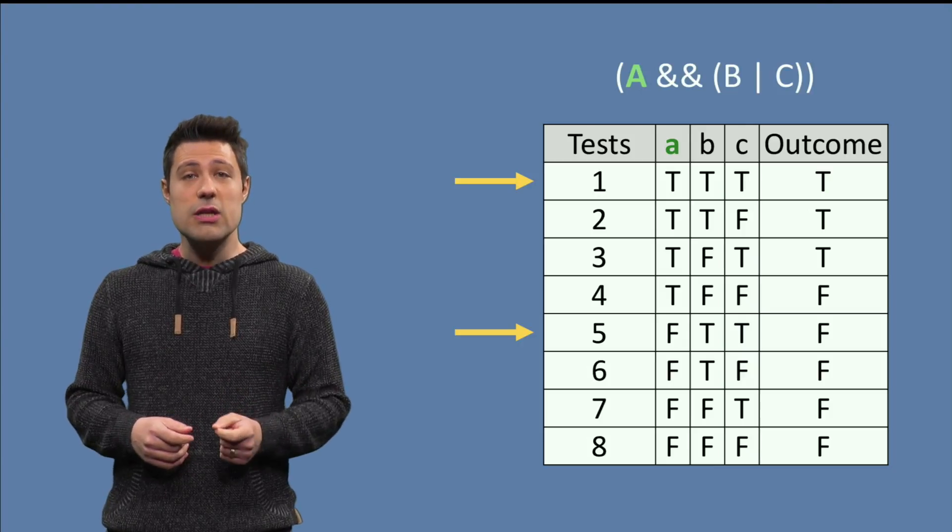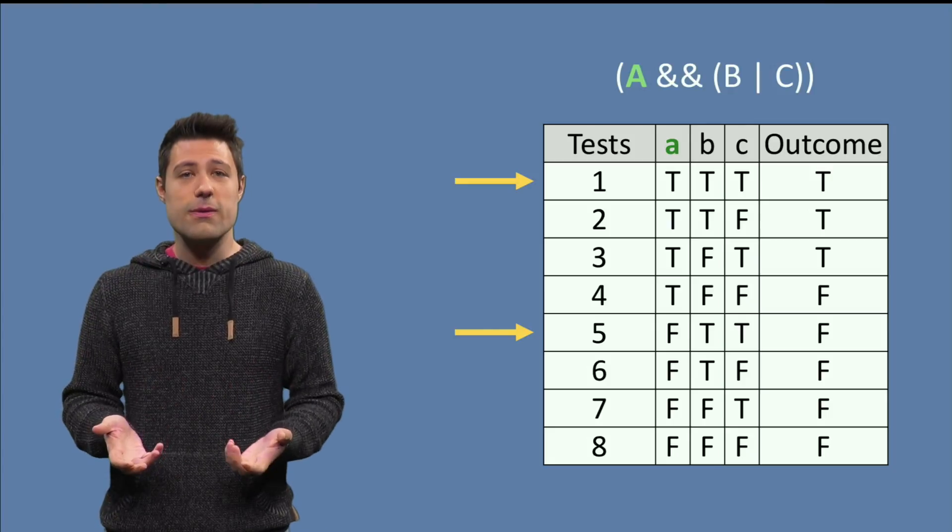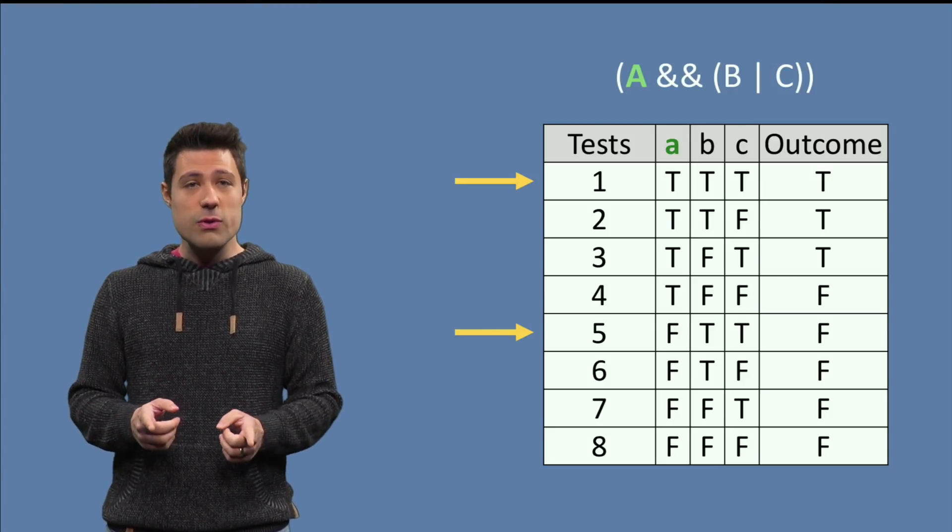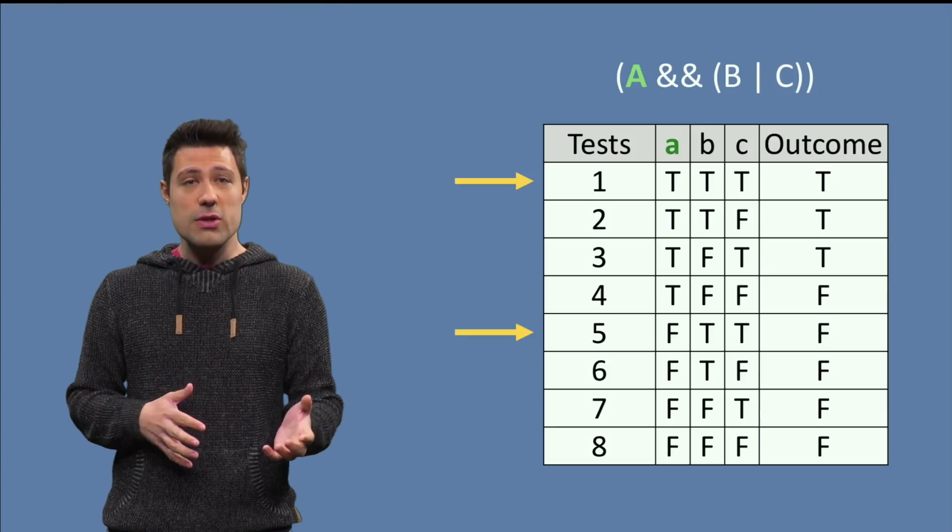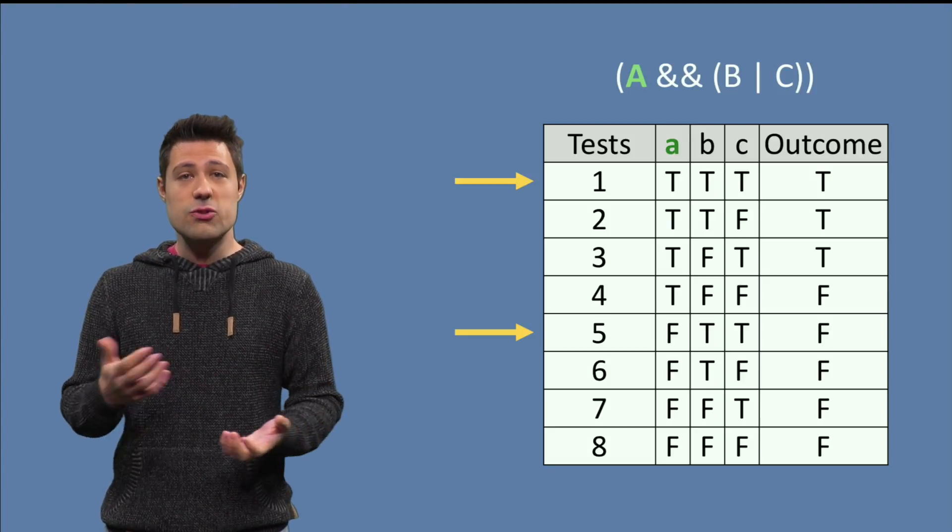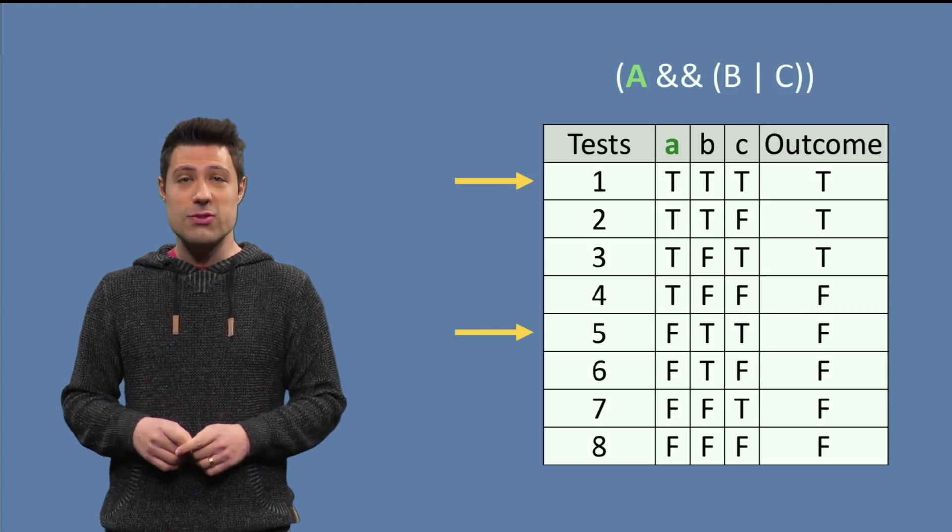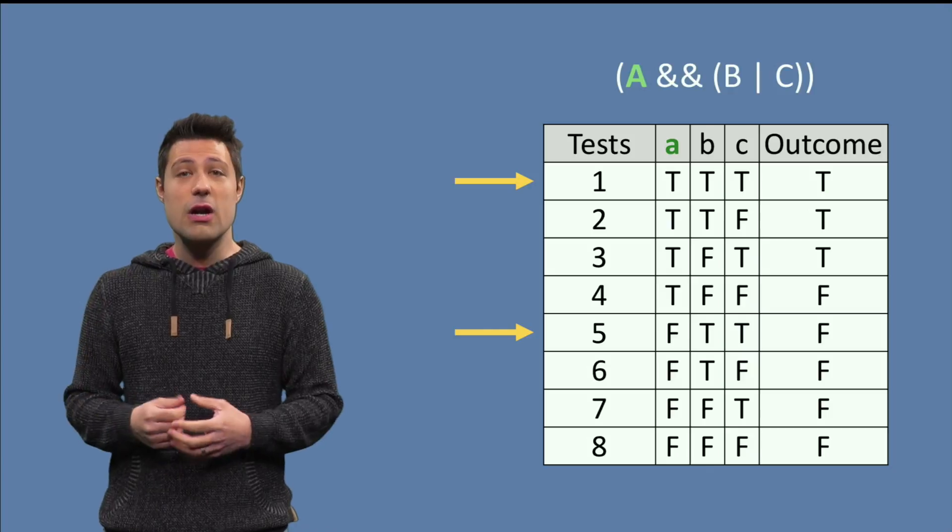See, the only condition that changed was A. But the outcome changed as well. This means that our software would take one path if A is true, B is false and C is true. But another one if A is false, B is true and C is true. This means that tests number 1 and number 5 are good tests for us.